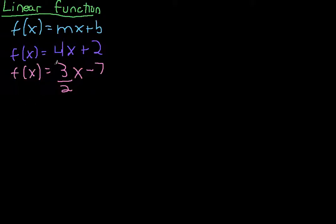Another example might be f of x equals 3 halves x minus 7. So notice here I can see my m term is 3 halves. My x is just x. It's nothing else. And that's really what makes it linear is that x is just x. And my b term would be minus 7.